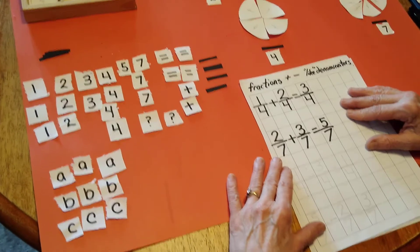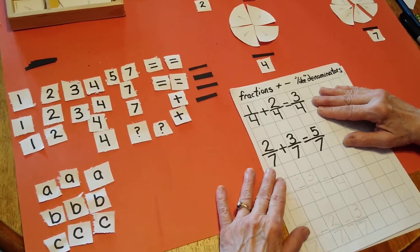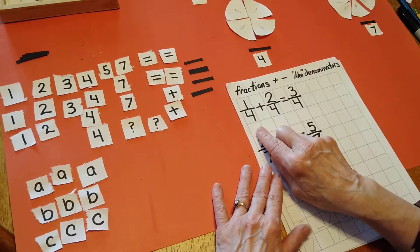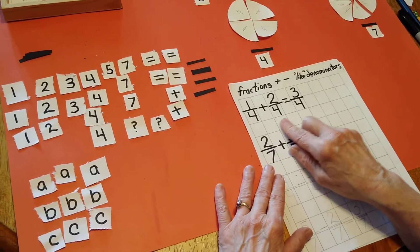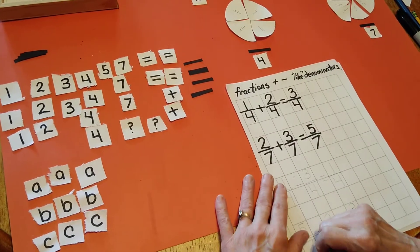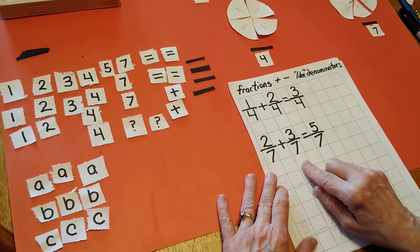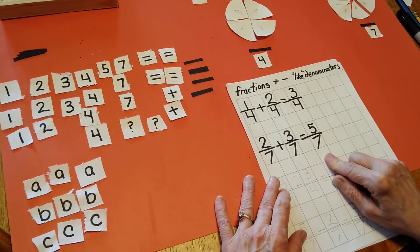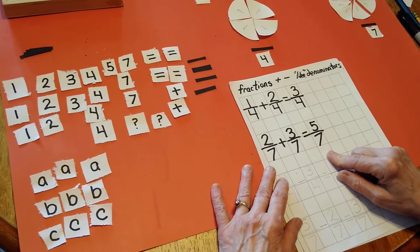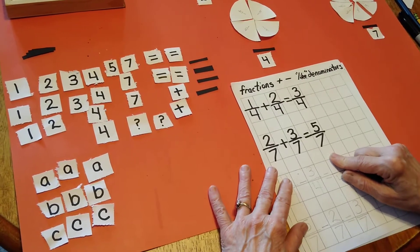From our last lesson, we had this recording. One-fourth plus two-fourths equal three-fourths. Two-sevenths plus three-sevenths equals five-sevenths. You explored some more adding with like denominators.